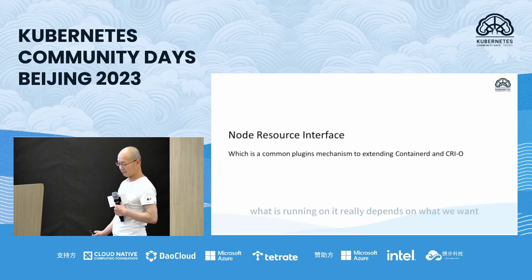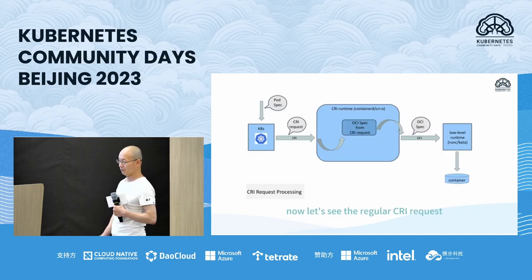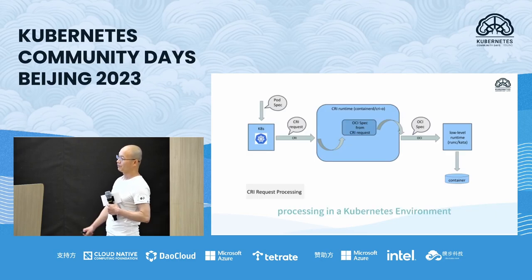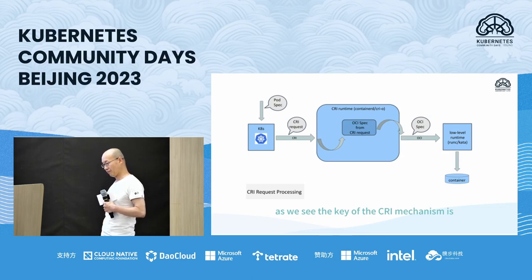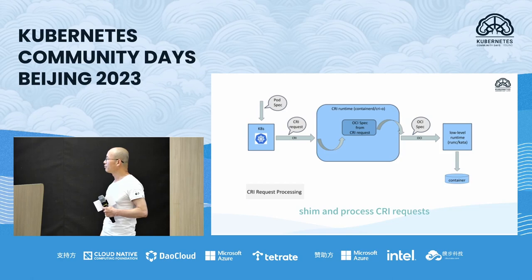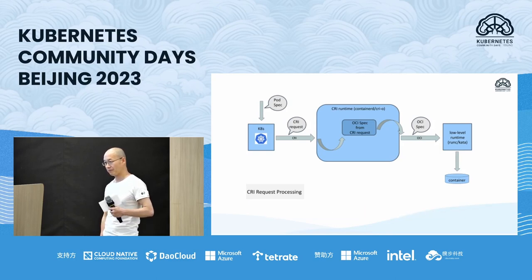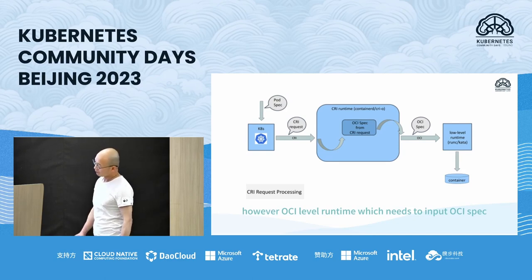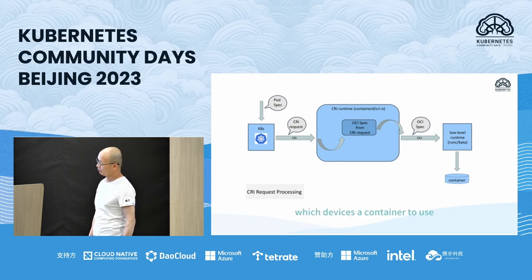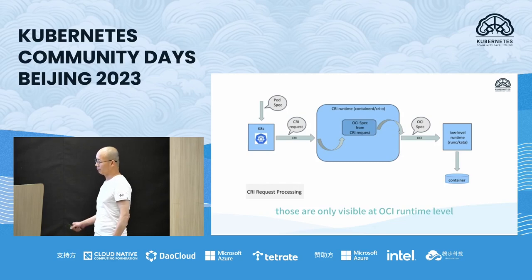NRI is a plugin — NRI is the highway. What is running on it really depends on what we want. Let's see the regular CRI request processing in a Kubernetes environment. The core of the CRI mechanism is that each container project can implement a CRI shim and process CRI requests. This gives Kubernetes a unified container abstraction layer, allowing lower-level containers to integrate and connect easily. However, at the OCI runtime level, OCI spec has information about which devices a container should use and many other parameters — those are only visible at the OCI runtime level.